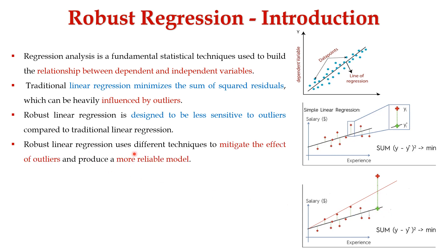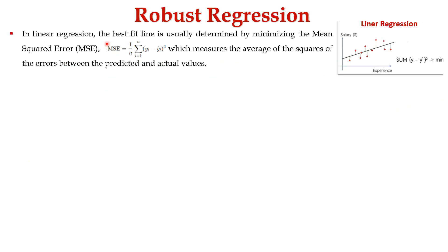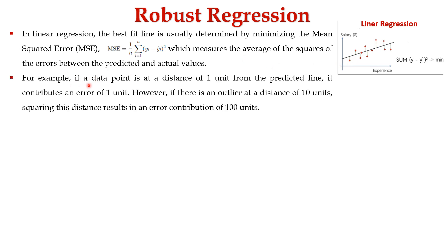Robust linear regression uses different techniques to mitigate the effect of outliers and produce a more reliable model. In linear regression, the best fit line is determined by minimizing the mean square error (MSE), calculated as (1/n) × Σ(yᵢ − ŷᵢ)², which measures the average of the squared errors between predicted and actual values. For example, if a data point is at a distance of 1 unit from the predicted line, it contributes an error of 1 unit.